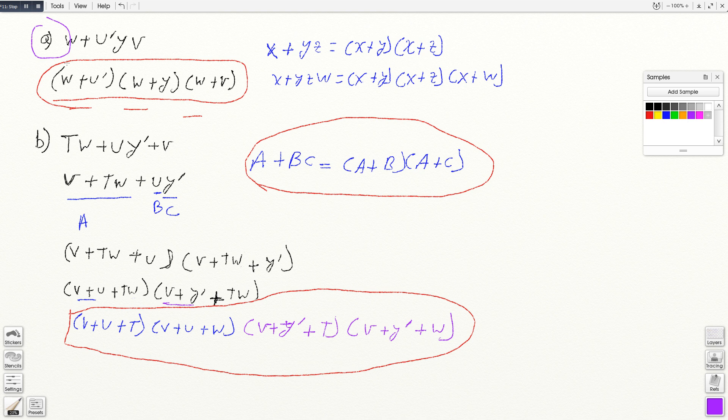This is part a, and as you can see, W times U' times Y times V. They want a product of sums - we need additions where they're multiplying. So we're using this root right here. Since they have the third variable, we adjust to this one. So W plus U', and then W plus Y, and then W plus V. There it goes, product of sums.